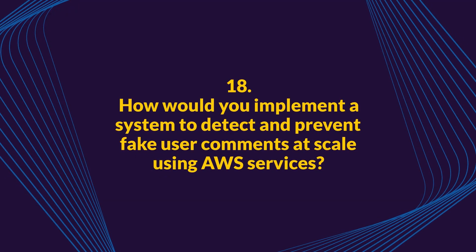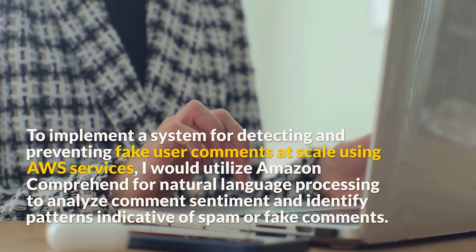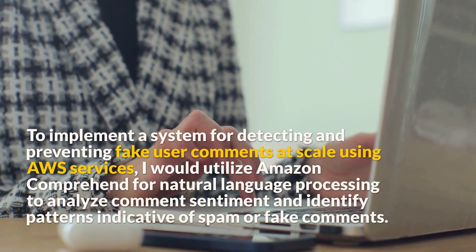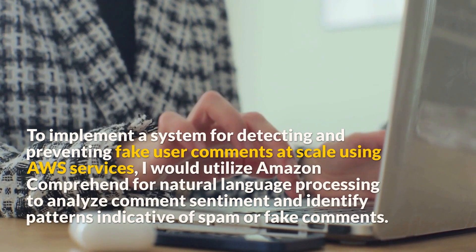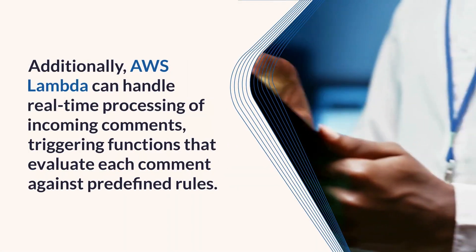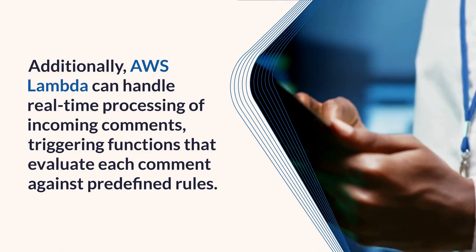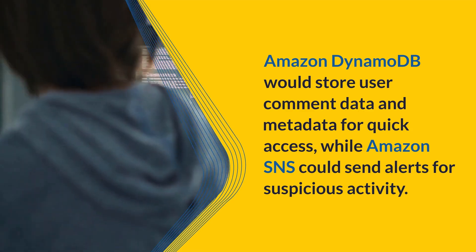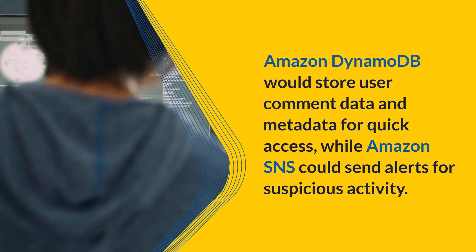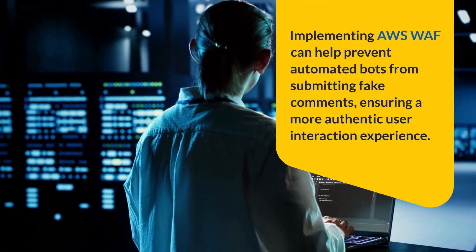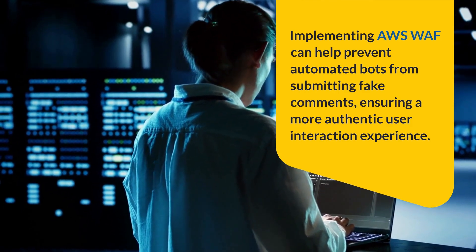Question 18: How would you implement a system to detect and prevent fake user comments at scale using AWS services? I would utilize Amazon Comprehend for natural language processing to analyze comment sentiment and identify patterns indicative of spam or fake comments. AWS Lambda can handle real-time processing of incoming comments, triggering functions that evaluate each comment against predefined rules. Amazon DynamoDB would store user comment data and metadata for quick access, while Amazon SNS could send alerts for suspicious activity. Implementing AWS WAF can help prevent automated bots from submitting fake comments, ensuring a more authentic user interaction experience.